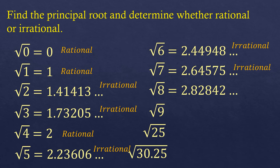For the square root of eight, using a calculator gives approximately 2.82842 and so on. You cannot get an exact whole-number value, and the decimal is non-terminating, so it is irrational. For the square root of nine, three times three equals nine, so the principal square root of nine is three — a rational number.